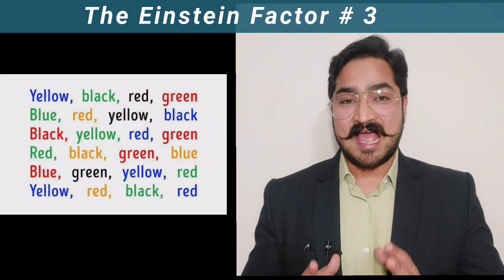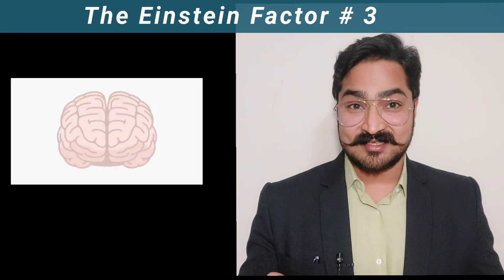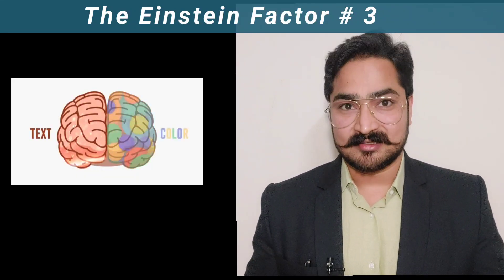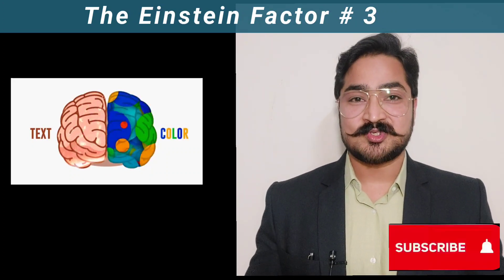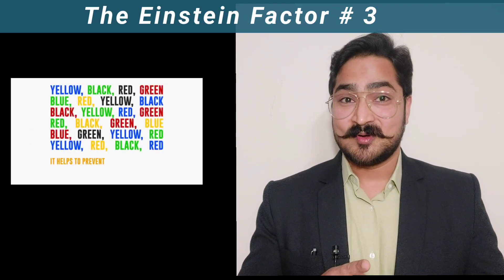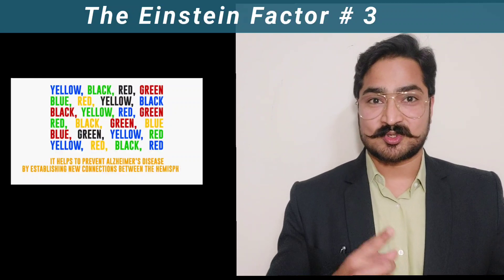You need to understand that one part of your brain is forcing you to read the text, the other part of the brain is going to force you to read the color. That's where you will be forced to use both sides of your brain. Give it a try, and also once you complete one cycle of this exercise, you need to do it in reverse order as well.